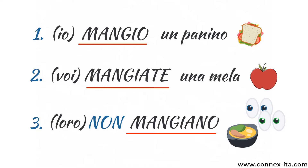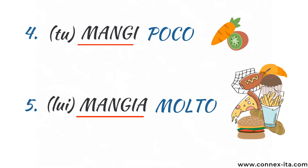Let's look at some examples. Io mangio un panino — I'm having a sandwich. Voi mangiate una mela — you are eating an apple. Loro non mangiano — they don't eat. We can also use poco or molto: tu mangi poco means you don't eat much, while lui mangia molto means he generally has lots of food.